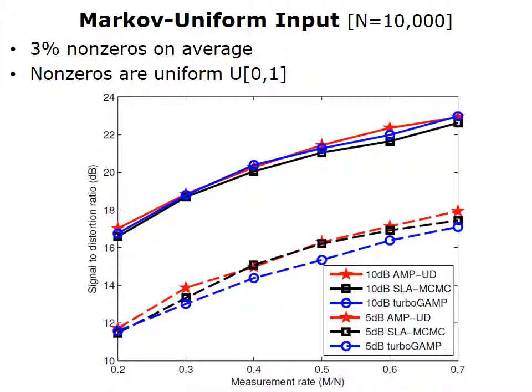Our third and final numerical result is for a Markov uniform input. This resembles the Markov Rademacher, but the non-IID values are generated by a uniform distribution between zero and one, and additionally this signal is only three percent non-zero on average. Similar to before, the red AMP-UD outperforms the black SLAM and the blue TurboGAMP. That said, the difference in reconstruction quality is less dramatic than before.